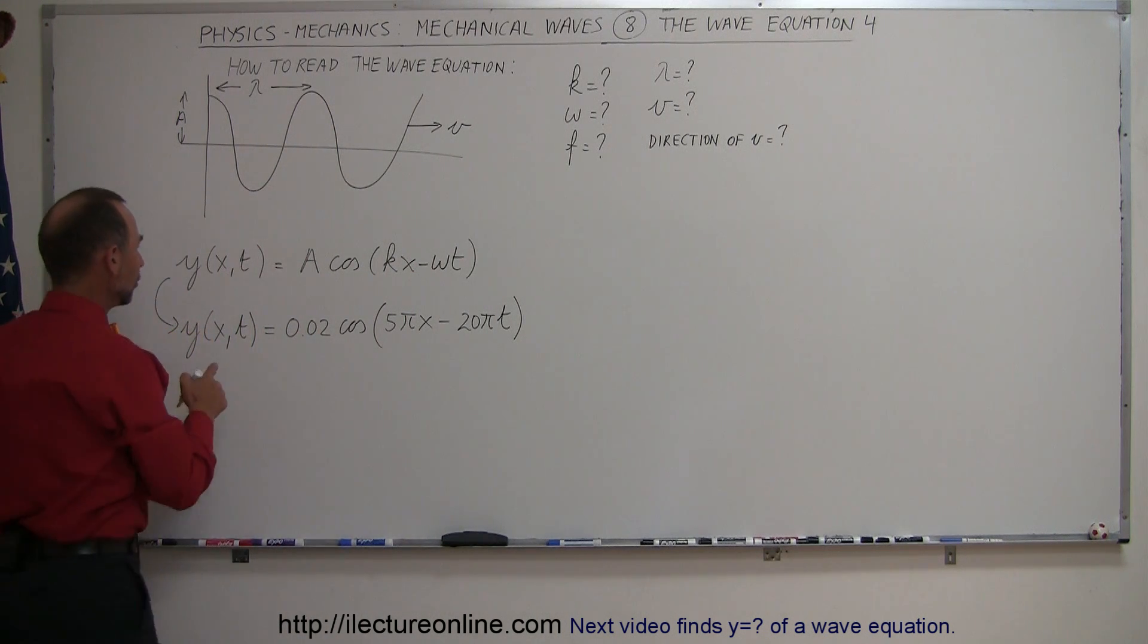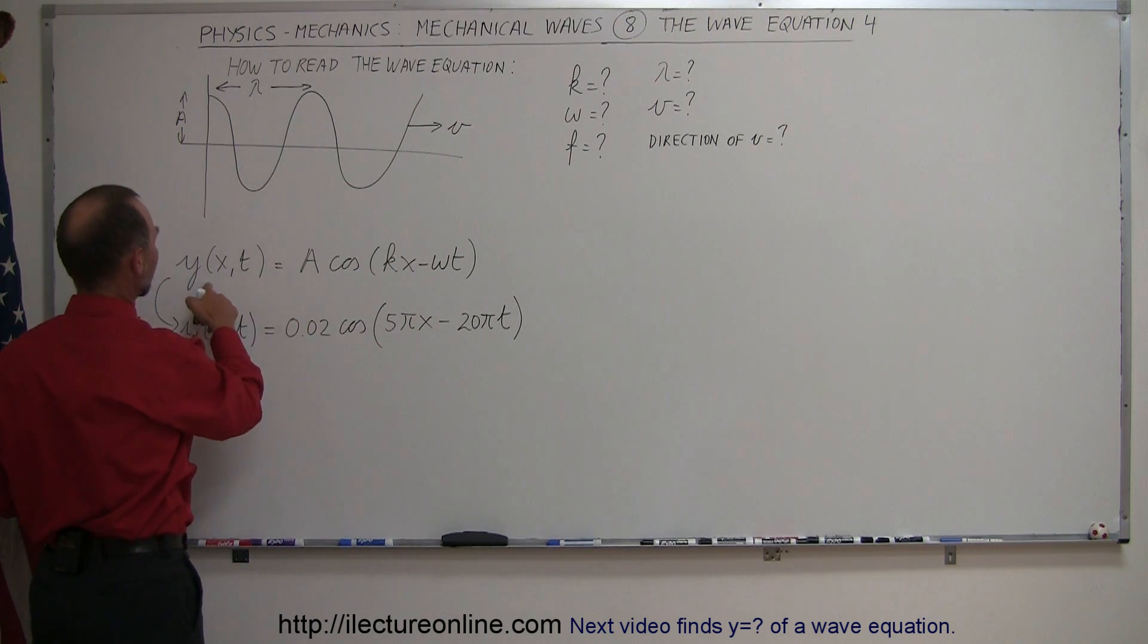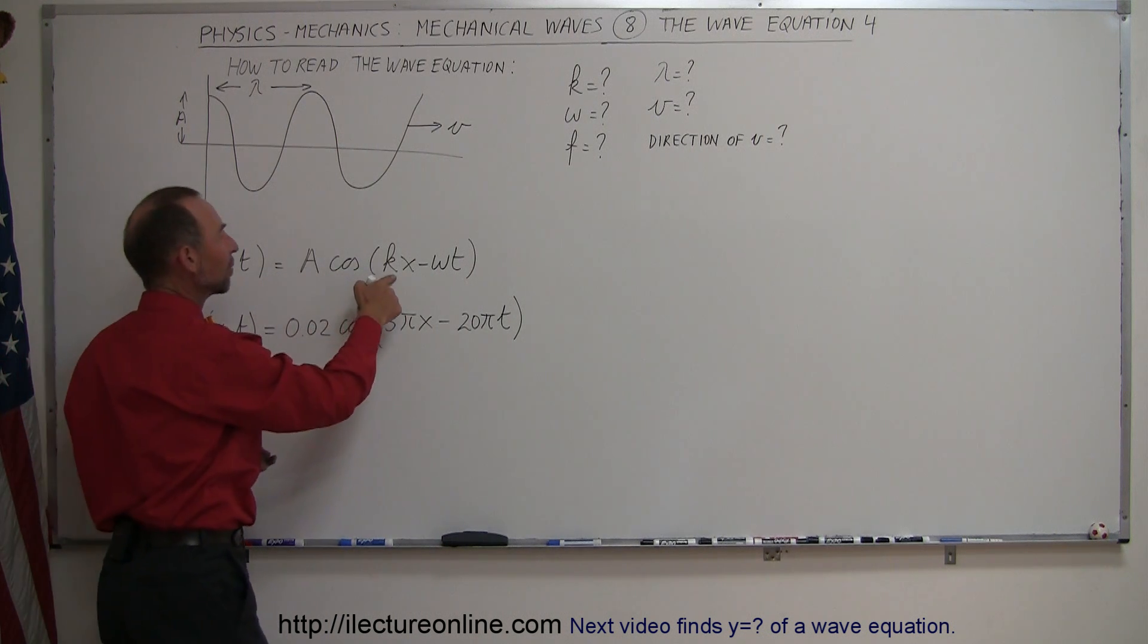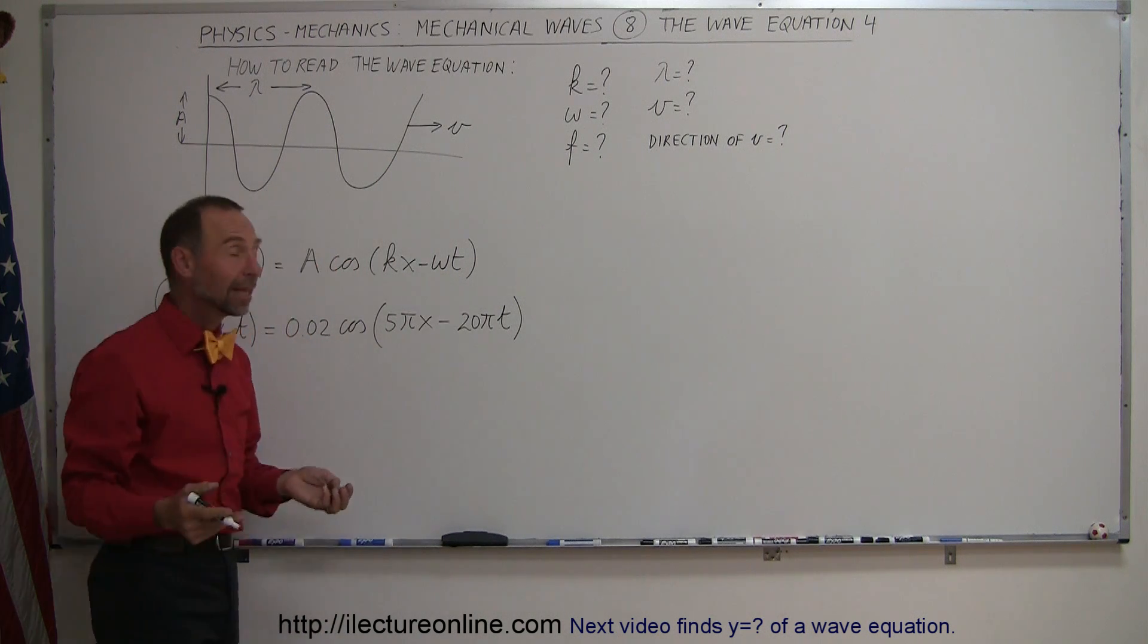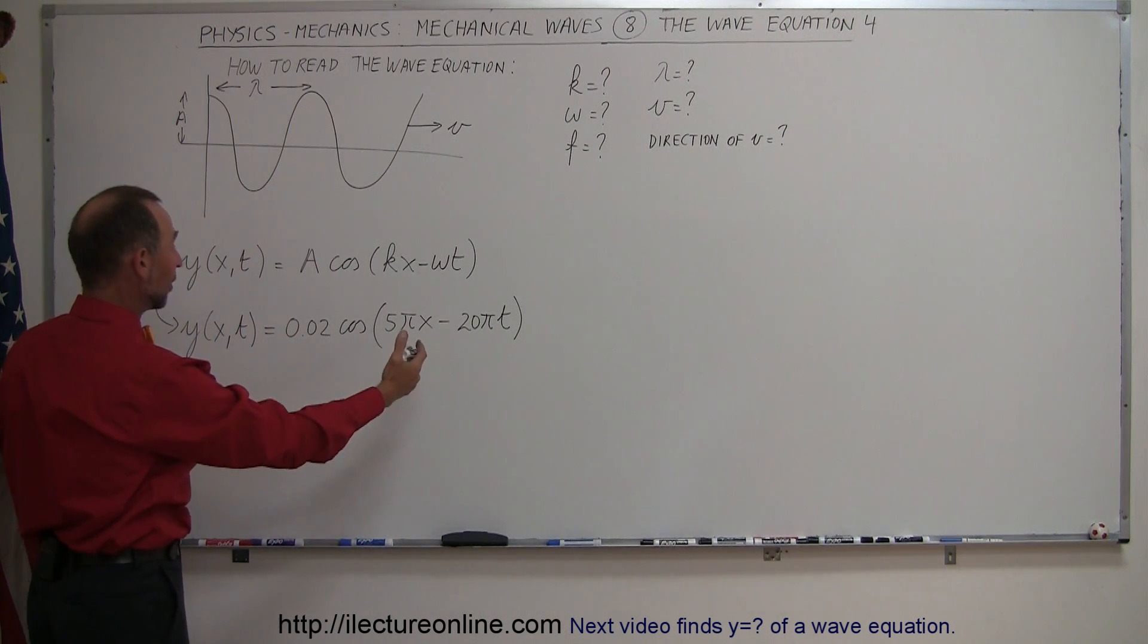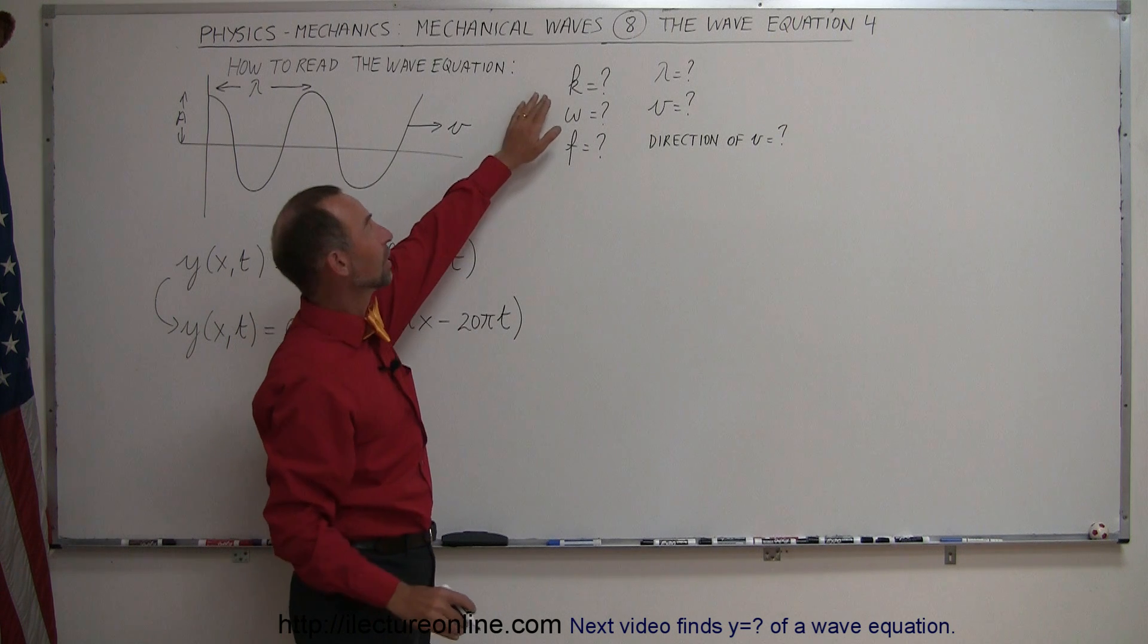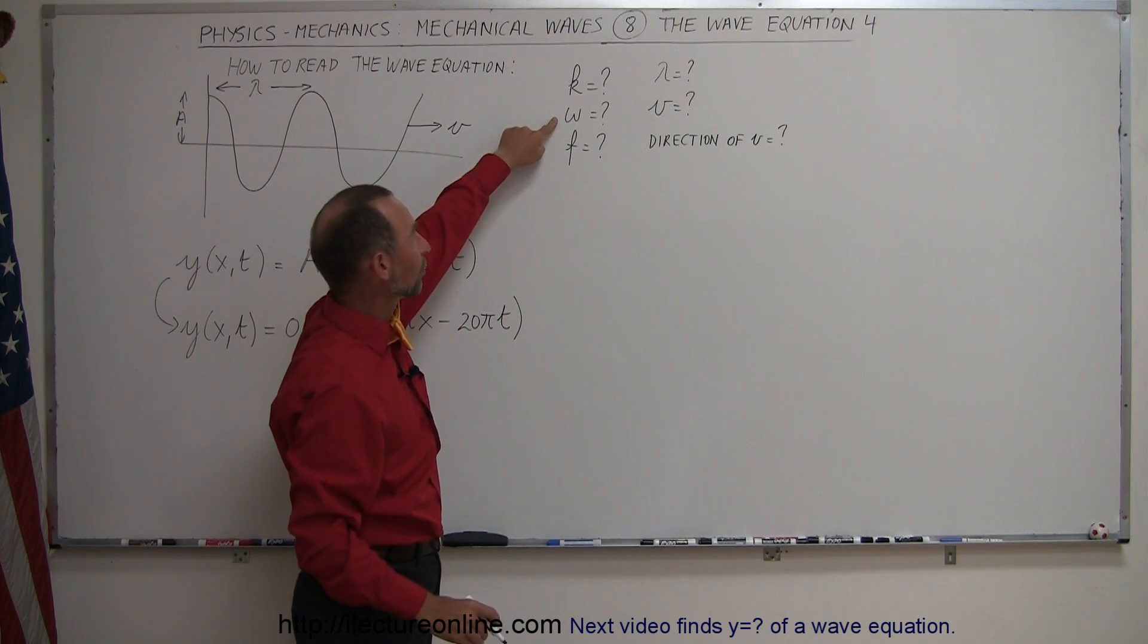So if the equation which has a standard form of y as a function of x and t is equal to the amplitude times the cosine of the wave number times x minus the angular frequency times t. If we then get the equation written like this we should be able to find what the wave number is, what the angular frequency is.